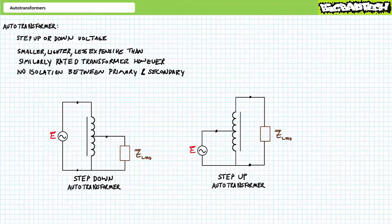Like traditional transformers, auto transformers can step up or down applied voltage depending upon configuration. The principal advantage of auto transformers is that in comparison to a similarly rated traditional transformer, auto transformers are smaller, lighter, and less expensive. The disadvantage of auto transformers is that being constructed with a single winding, the primary and secondary windings are not electrically isolated from one another, and an auto transformer cannot be used in an application requiring electrical isolation between systems.